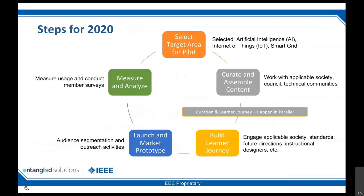Here's the process we put together. First, we wanted to select target areas for our pilot program, and we selected three: artificial intelligence, Internet of Things, and smart grid. We are now in the stage of curating and assembling existing content in those three areas. With that content, we're going to build a learner journey. Once we have the learner journey and build the entire course out, we can launch and market these three prototypes, analyze and measure the member response, and then select more areas for building courses.